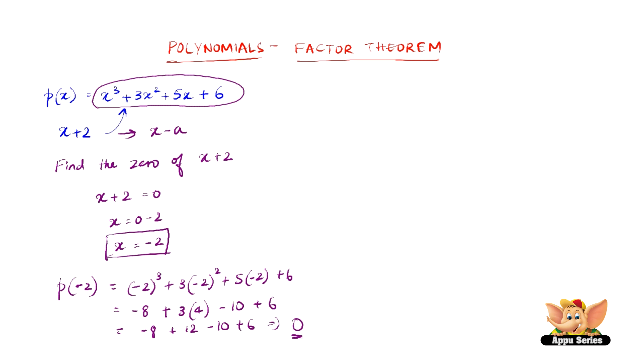So p(-2) = 0, therefore we can say that x + 2 is a factor of x³ + 3x² + 5x + 6.